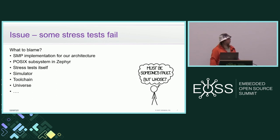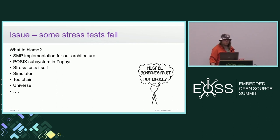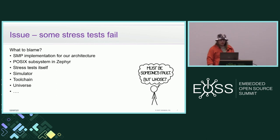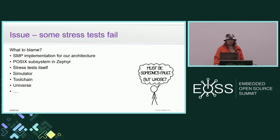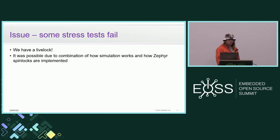Such things really go smoothly in the beginning. Among other things, we were bumping into an issue where some of our stress tests were failing. In this situation, when you have a new processor architecture, you have a lot of things which may go wrong. The issue can be in lots of places — we may have some flaws in SMP implementation for our architecture, it could be an SMP-related issue in the POSIX subsystem, it could be an issue with the stress test itself, or it could be an issue with some of our tools like the toolchain or simulator.